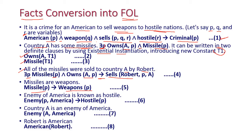The statement 'enemy of America is known as hostile' converts to: Enemy(p, America) ⟹ Hostile(p). Next, 'country A is an enemy of America' gives: Enemy(A, America). And finally, 'Robert is American' gives: American(Robert).